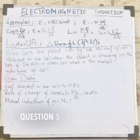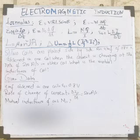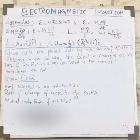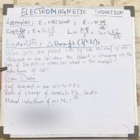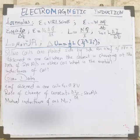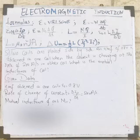Two coils are placed side by side. An EMF of 0.8V is observed in one coil when the current is changing at the rate of 200 amperes per second in the other coil. What is the mutual inductance of the coil?